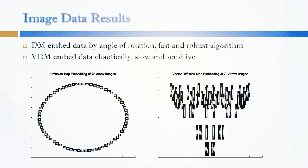We also tested these two algorithms for a data set of rotated image errors. As you can see on the picture on the left, diffusion maps embed the data clearly by the angle of rotation while vector diffusion maps embed this data rather chaotic.